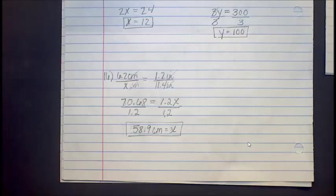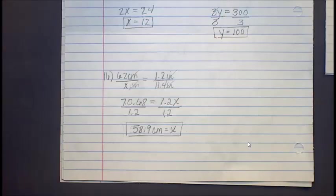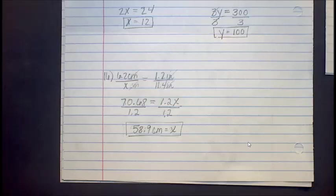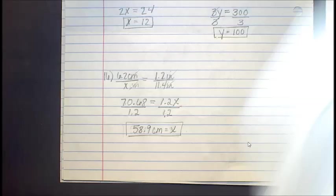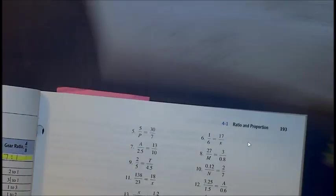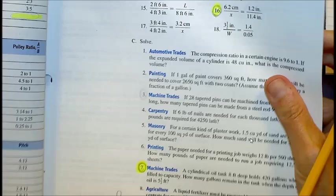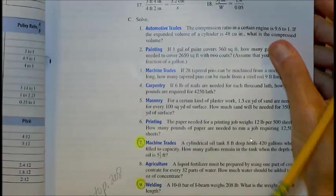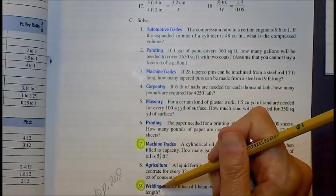So same process. You set it up. You do the cross multiply. And then, if needed, you solve for the unknown. Now, in part C, we have a couple of word problems that we can do. So the two that I picked out for reinforcing this idea of proportions are, on page 193, number 7 and number 9. And we'll go through these together.